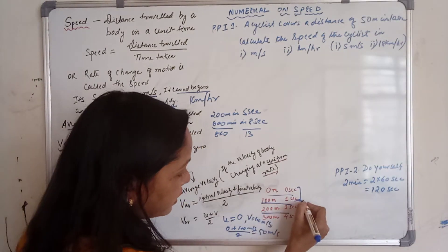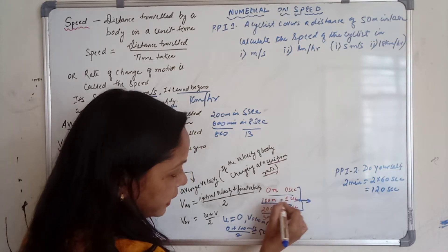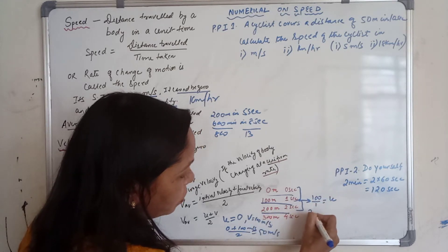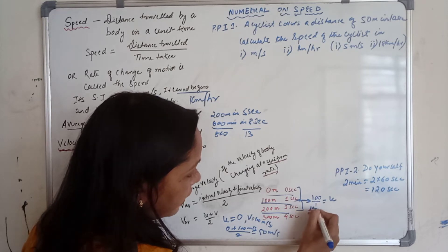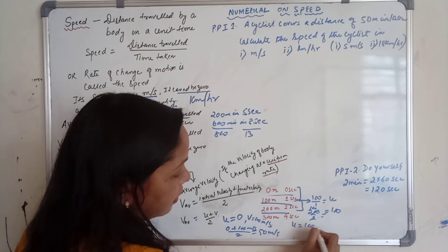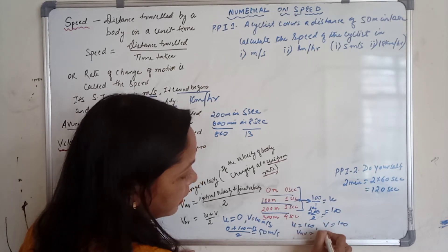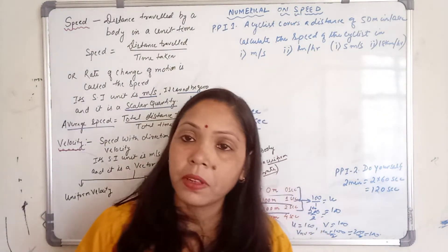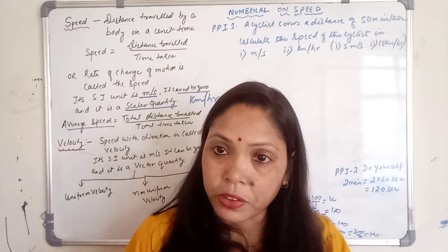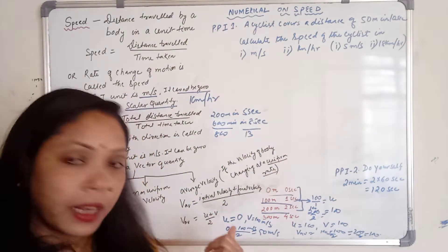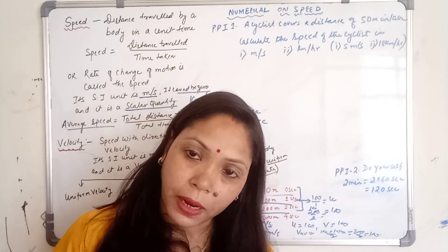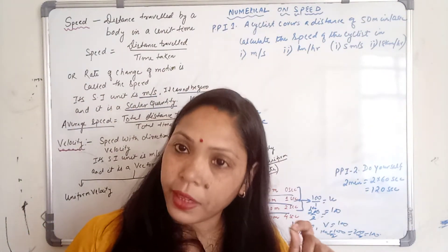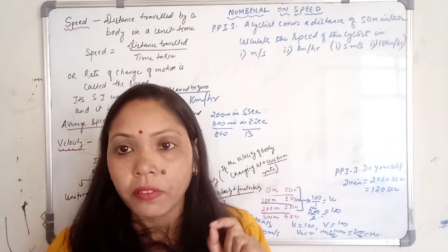Similarly, taking the next two readings: first find the velocity — 100 by 1 gives initial velocity of 100. Then the second reading: 200 divided by 2, again 100. So initial velocity is 100 and final velocity is also 100. Average velocity is 100 plus 100 divided by 2, which equals 200 by 2, which equals 100. It means whenever the body changes its velocity at a uniform rate, we can use the formula: initial velocity plus final velocity divided by 2, that is U plus V by 2. U is the symbol of initial velocity, V is the symbol of final velocity.